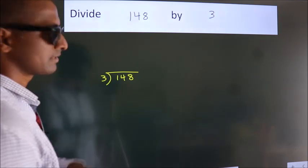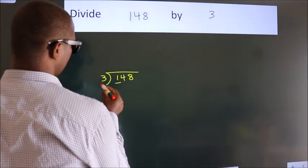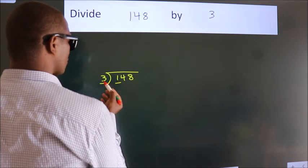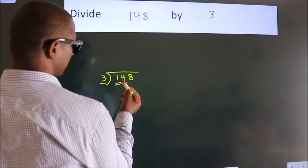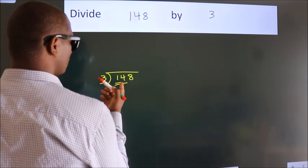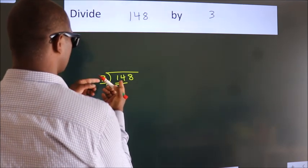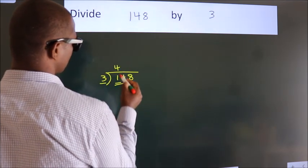Next, here we have 1, here 3. 1 is smaller than 3, so we should take 2 numbers: 14. A number close to 14 in the 3 table is 3 fours 12.